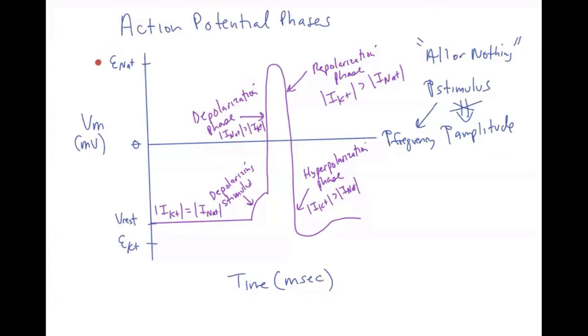And we have the equilibrium potential for sodium being a positive number because it's a cation that has a higher concentration on the outside relative to the inside.